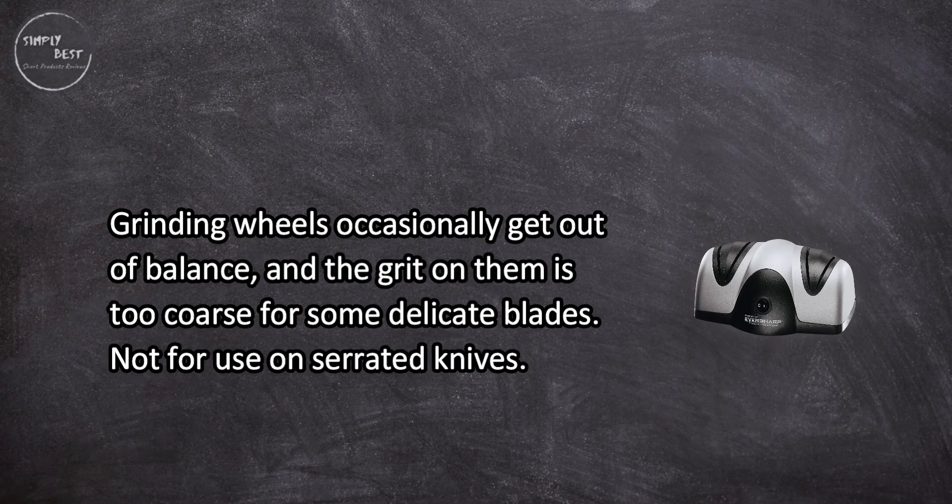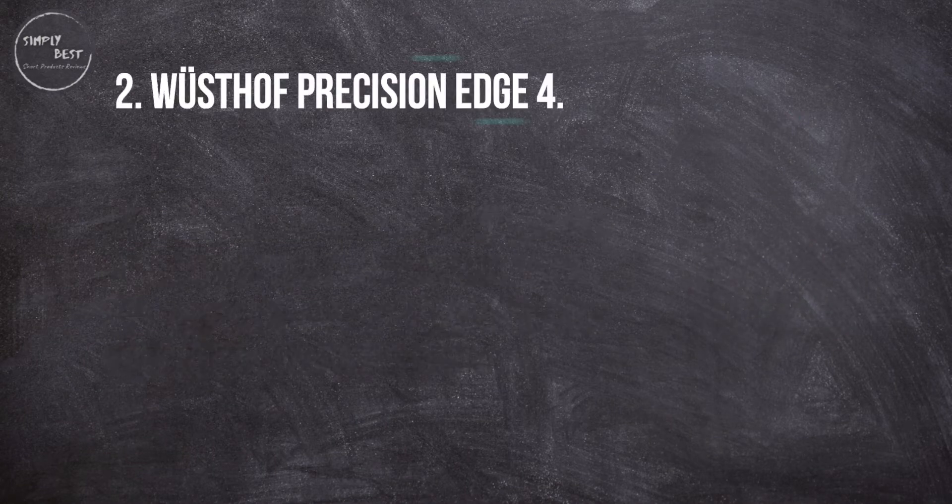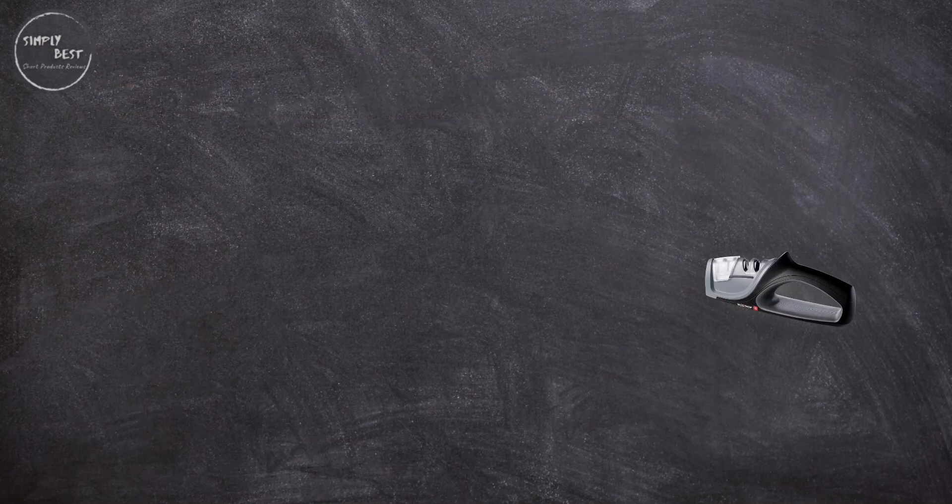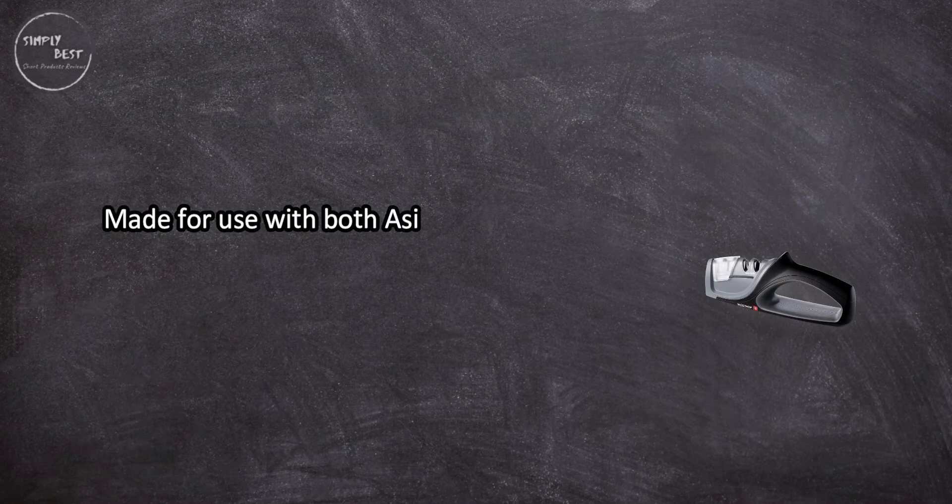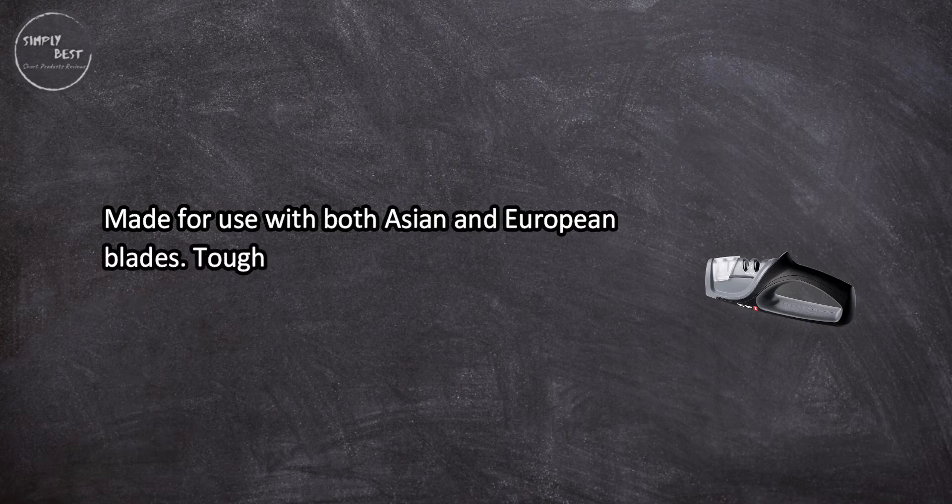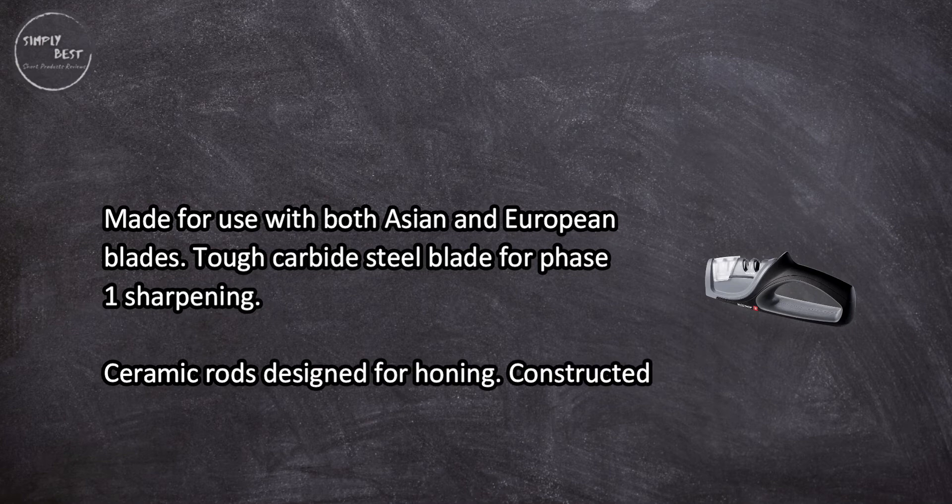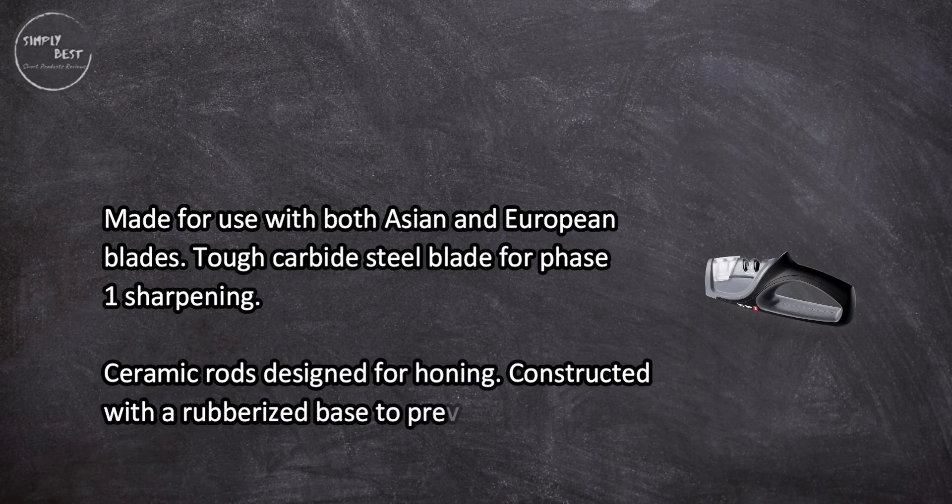At number two, Wüsthof Precision Edge 4. Made for use with both Asian and European blades, it features a tough carbide steel blade for phase one sharpening, ceramic rods designed for honing, and is constructed with a rubberized base to prevent slips and weighted for additional safety.